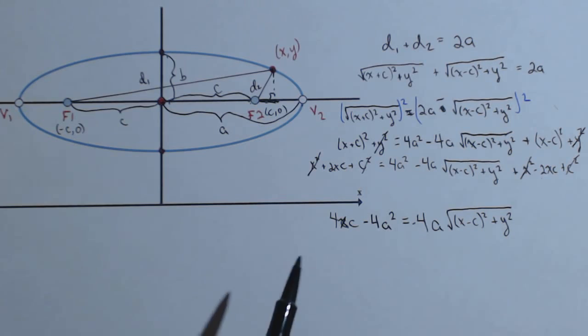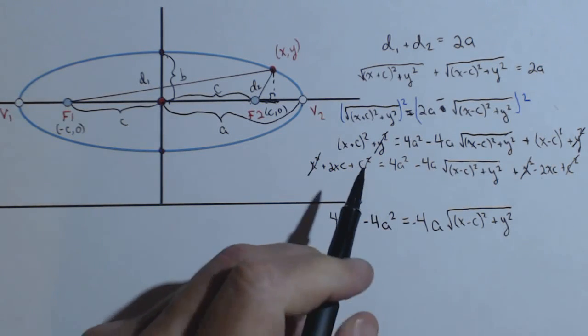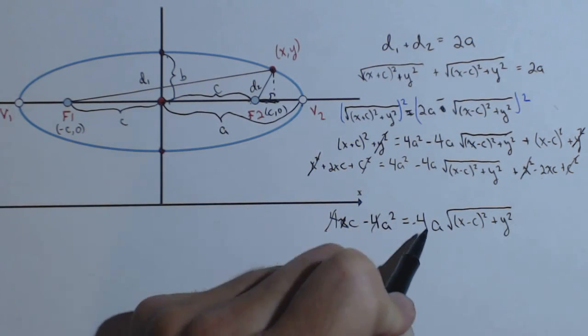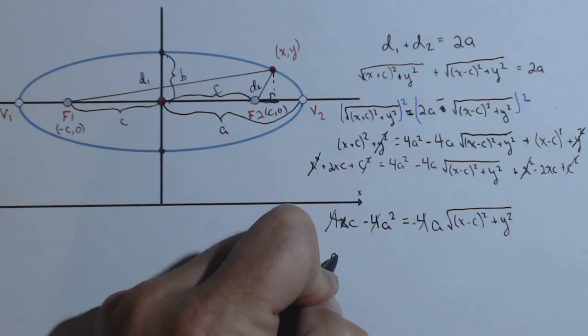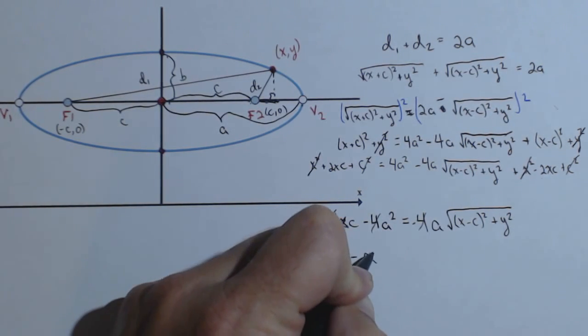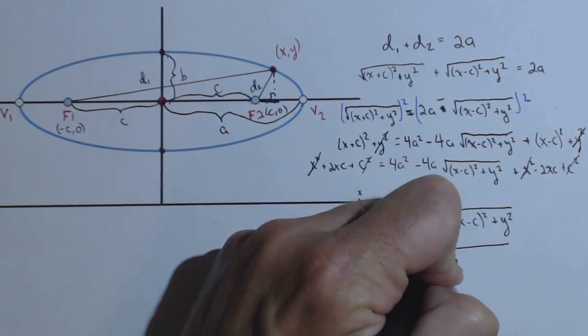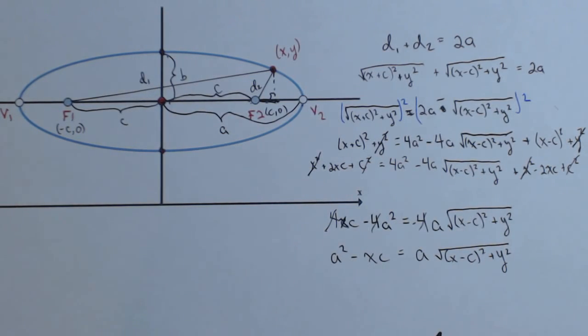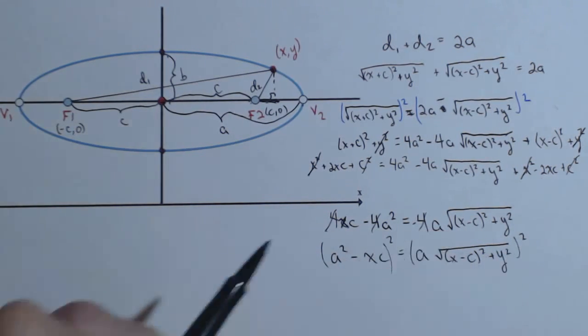One thing we could do here, we could divide everything by 4, so that we don't have to worry about the 4. So, if we divide everything by 4, actually, we could divide it by a negative 4, we'll get A squared minus XC equals A times the square root of X minus C squared plus Y squared. We could divide by the A as well, I'm just going to leave it as is for now, because we need to square both sides.